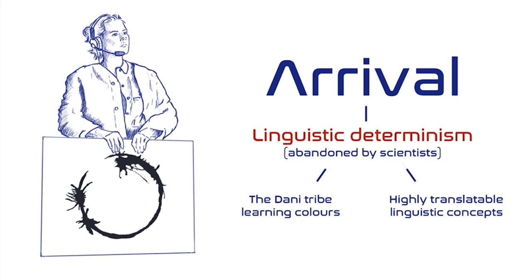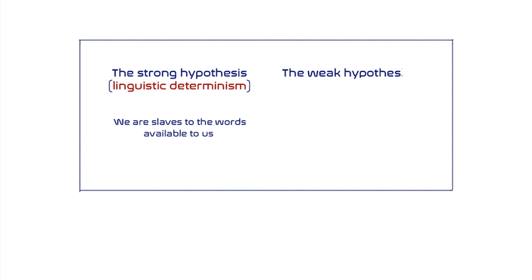Although the deterministic view has been rejected, the empirical research on the topic confirms some milder influence of language on thought, or the weak version. According to the weak version, the language does influence our mental processes to some extent but it does not fully determine the way we view the world and the way we think.